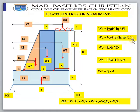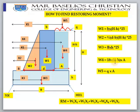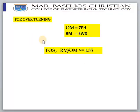W3 is the base slab weight: D × h × 25. W4 is the soil weight on the heel: A × (H − h) × 18 kN/m³ (unit weight of soil). W5 is the surcharge load: q × A. Adding all these moments gives the total restoring moment.